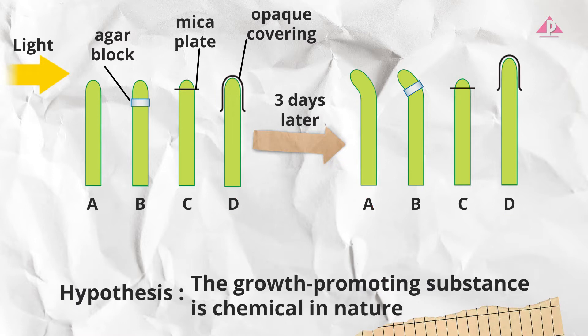Next to test a hypothesis the growth promoting substance is chemical in nature. Given that the growth promoting substance is produced by the tip which setups should be compared? The answer is setups A, B and C.